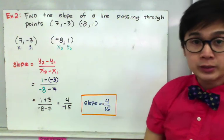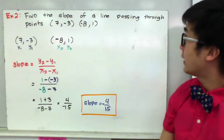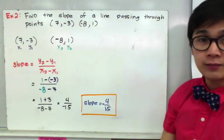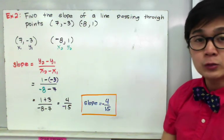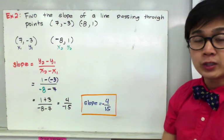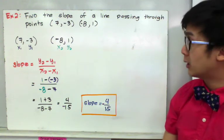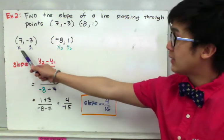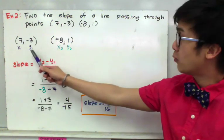Now for example number 2, let's find the slope of a line passing through points 7 and negative 3 and negative 8 and 1. So we have another 2 points, and we're going to compute the slope using the formula. For the first set of points, we have 7 and negative 3. So x sub 1 is 7 and y sub 1 is negative 3.